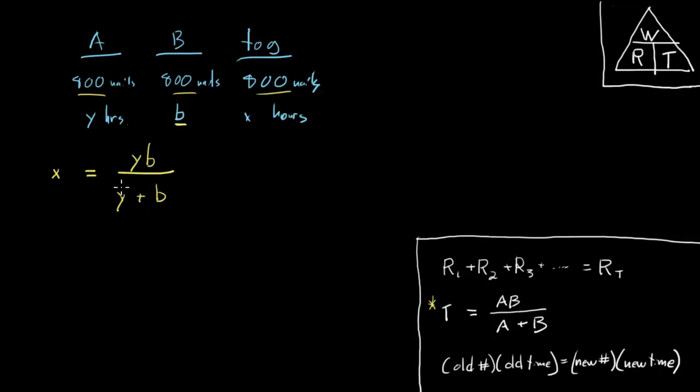If I multiply both sides by the denominator here, by Y plus B, my fraction will go away because this Y plus B cancels with this Y plus B. The X will be distributed into each of these terms, so this side becomes X times Y plus X times B, and that all equals YB.